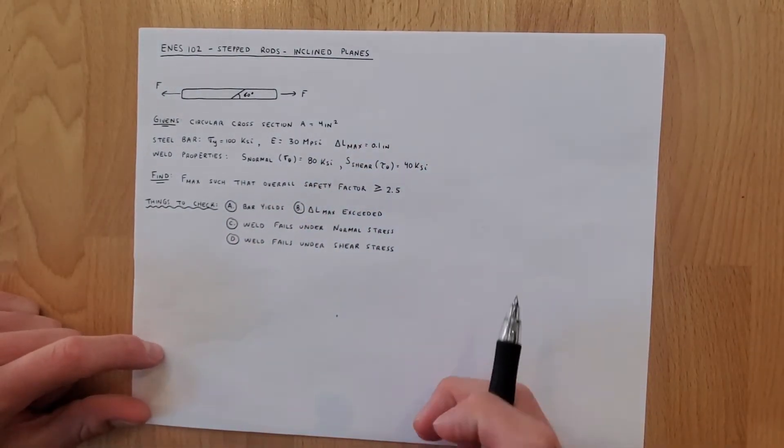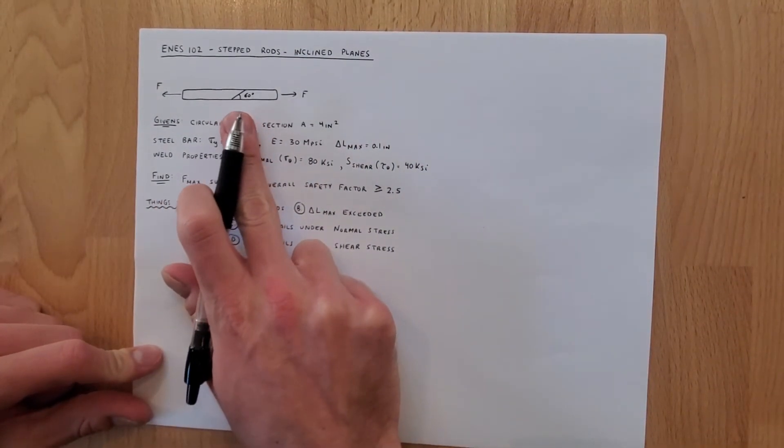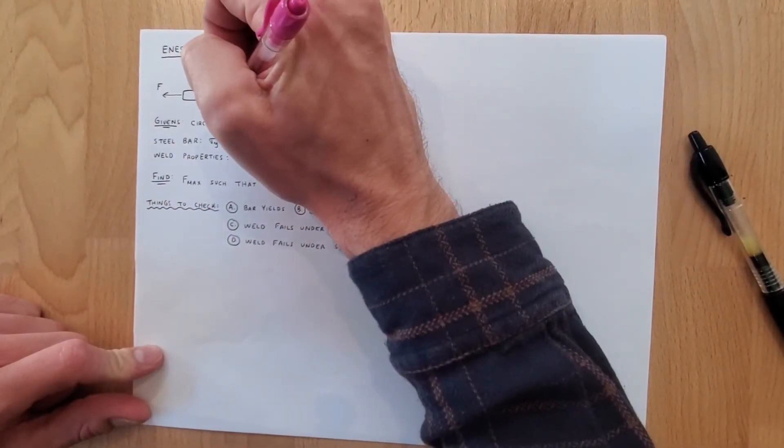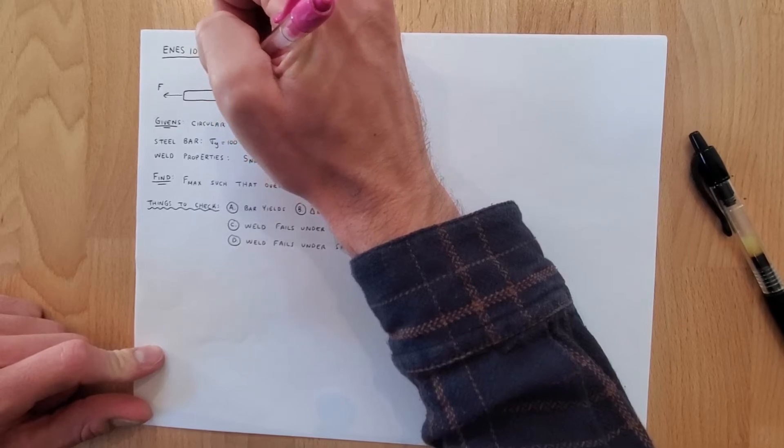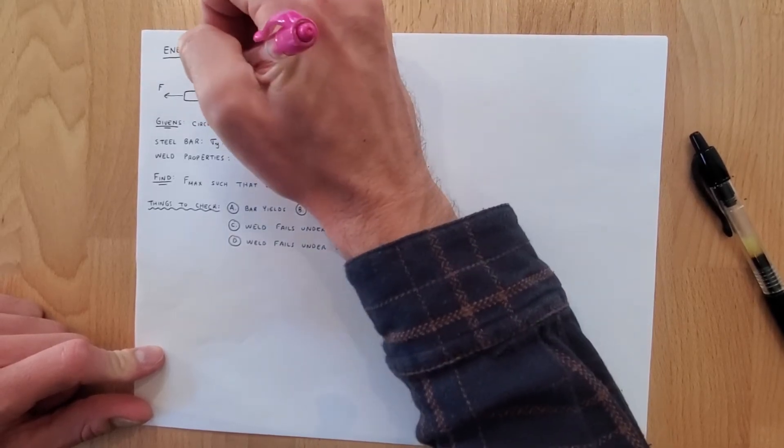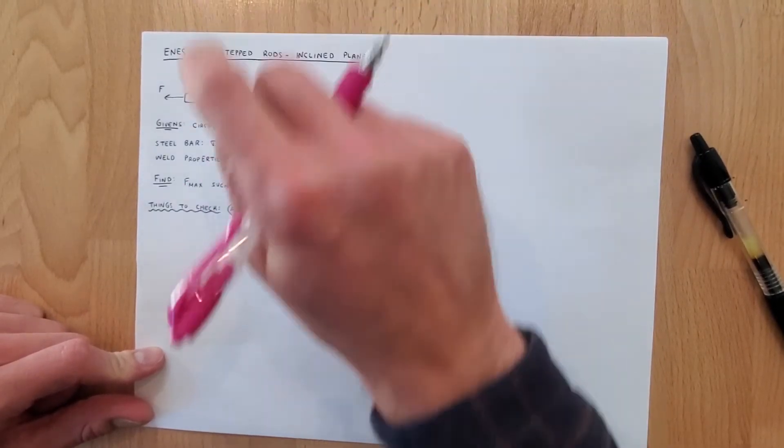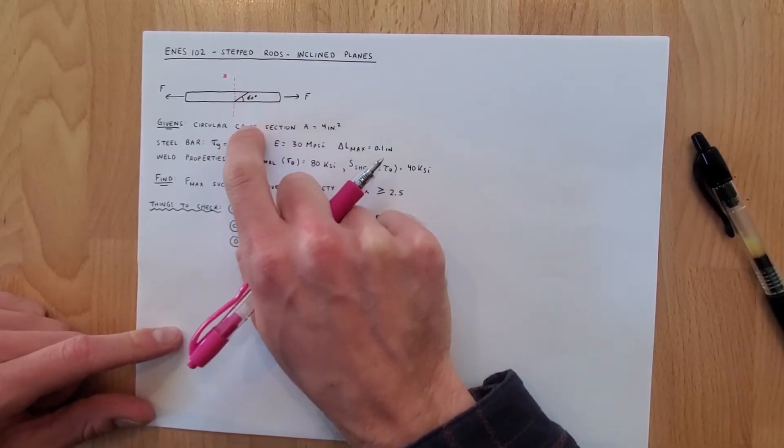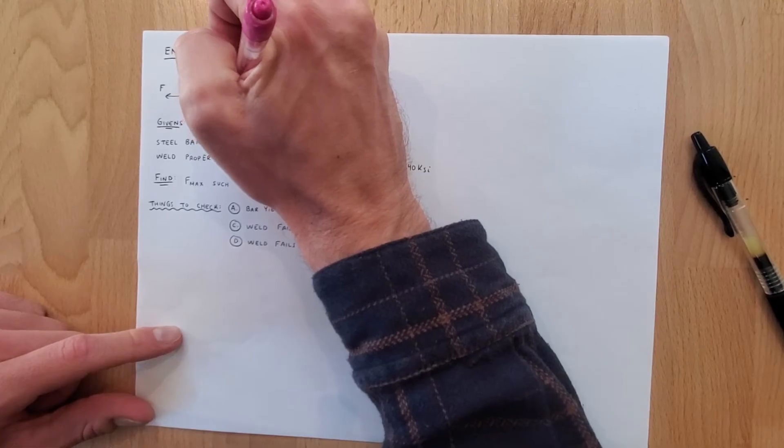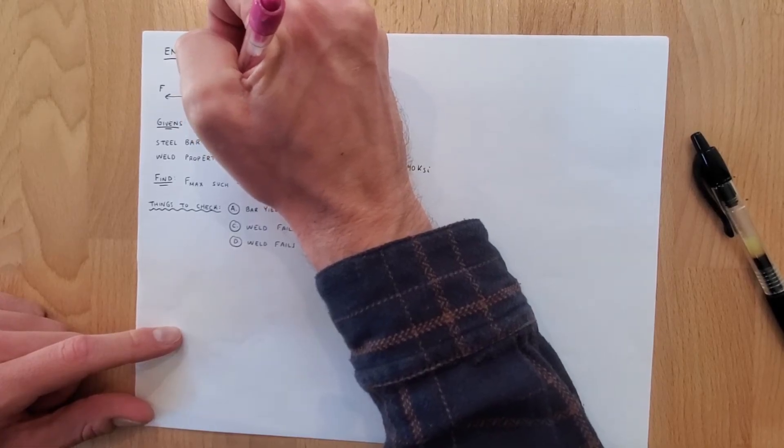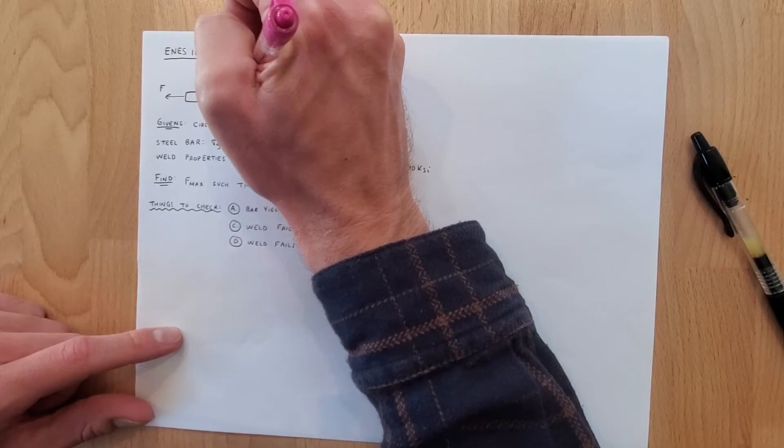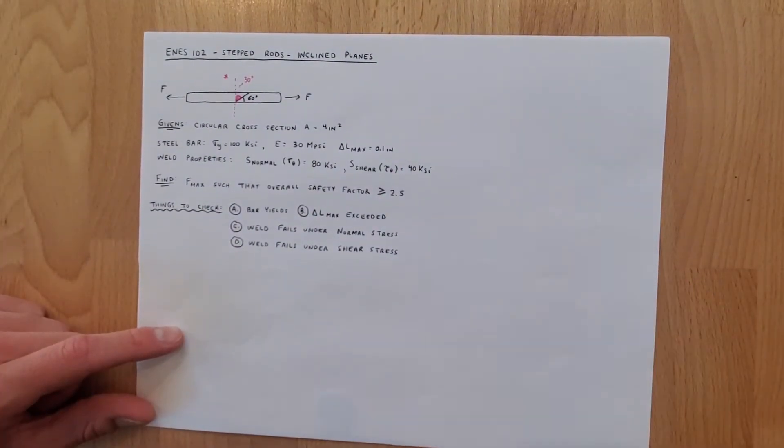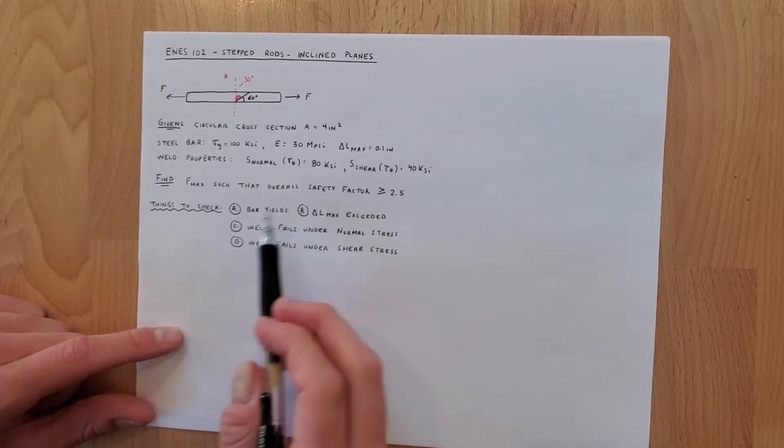One thing that we need to just be really sure about before we begin this problem and forget is that this angle of 60 degrees is not actually the angle that we want. Remember from the lecture we just did the angle should be relative to a vertical line that passes through so the angle that we really want is this pink one right here which is 30 degrees. Now that we've got that out of the way we can check conditions a, b, c, and d.